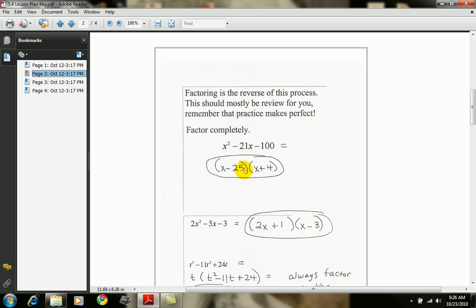And negative 25x plus 4x gives me negative 21x in the middle. So I teach my students the trial and error method, and then I tell them to check it with chin and grin.